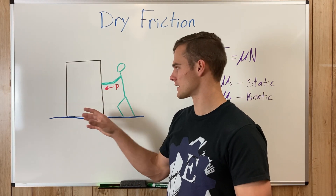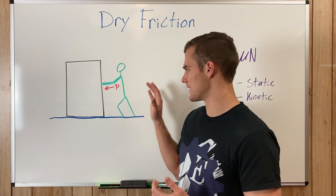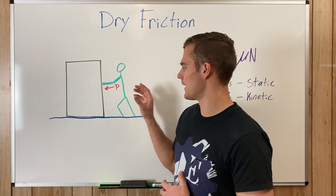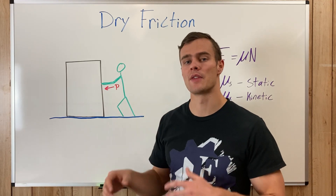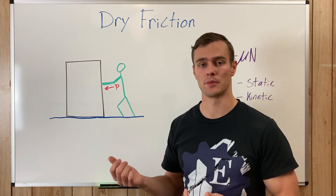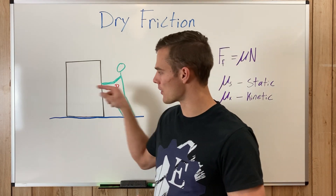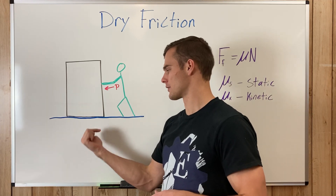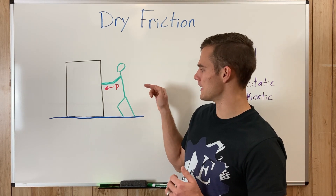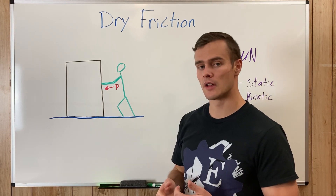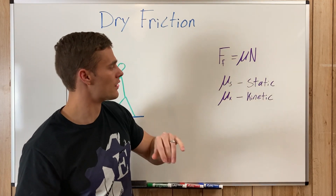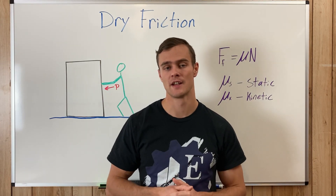The man pushes on the box and the friction force keeps it from sliding — nothing else is resisting the movement. The friction force on the bottom of the box pushes back in the opposite direction of impending movement. If the box would move one way, friction pushes the other way. The force of friction and the push force are equal up until the maximum friction is reached, which is the coefficient of static friction multiplied by the normal force.